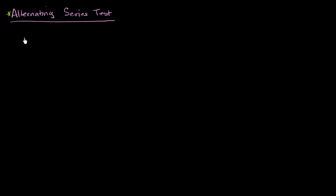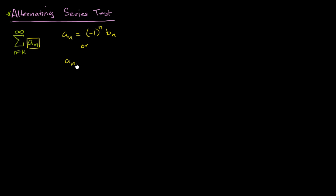Let's say that I have some infinite series from n equals k to infinity of a sub n, and let's say I can rewrite a sub n. So a sub n is equal to negative one to the n times b sub n, or a sub n is equal to negative one to the n plus one times b sub n, where b sub n is greater than or equal to zero for all the integer n's greater than or equal to k.